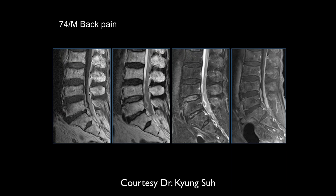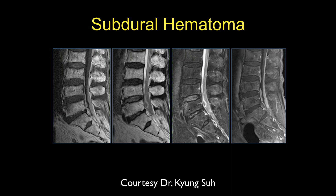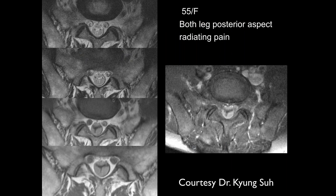We have the high signal here which looks like it's compressing the thecal sac, so it appears to be outside the thecal sac. This was a subdural hematoma and you can see it extends up and down the spine, which is pretty characteristic of a subdural hematoma. The axial plane can be very helpful to evaluate this.